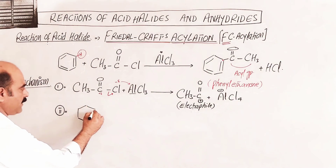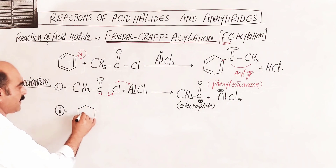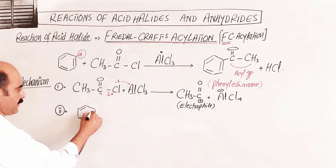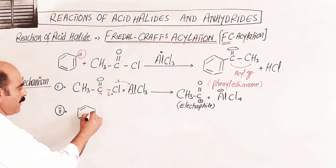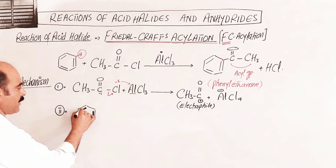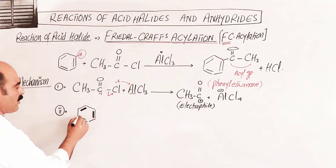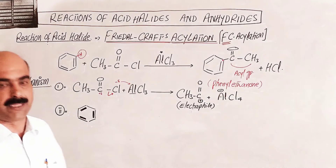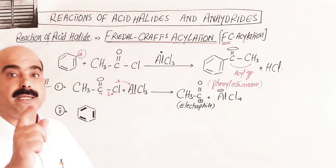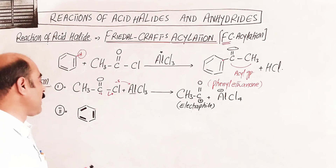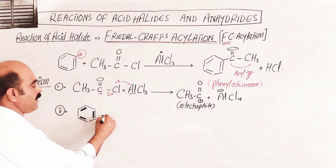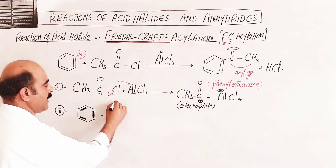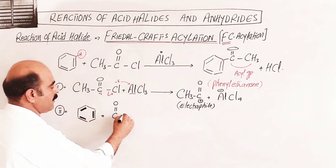The benzene ring is a rich source of electrons — it has 3 pi bonds, or a total of 6 pi electrons spread over all 6 carbon atoms. Because benzene is a rich source of electrons, it attracts electrophiles.